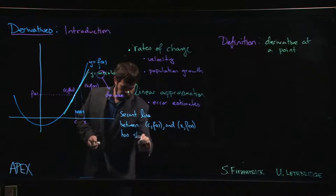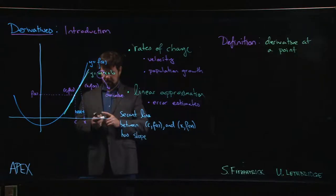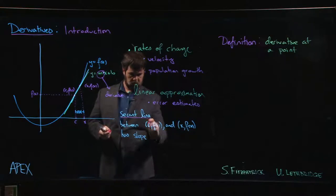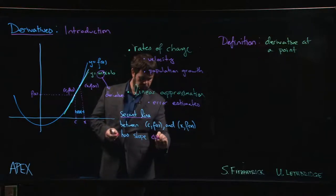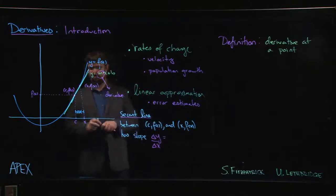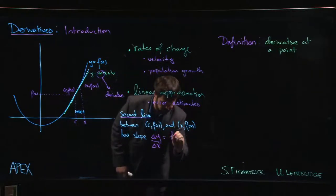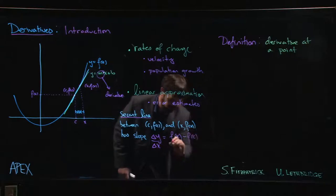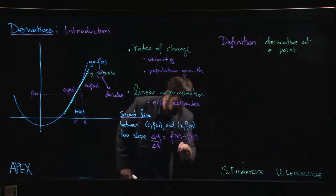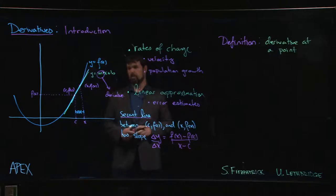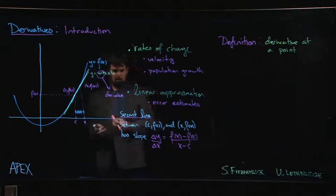What's the slope of that secant line? The slope is simply delta y over delta x, and our change in y is simply f(x) minus f(c). The change in x is x minus c.